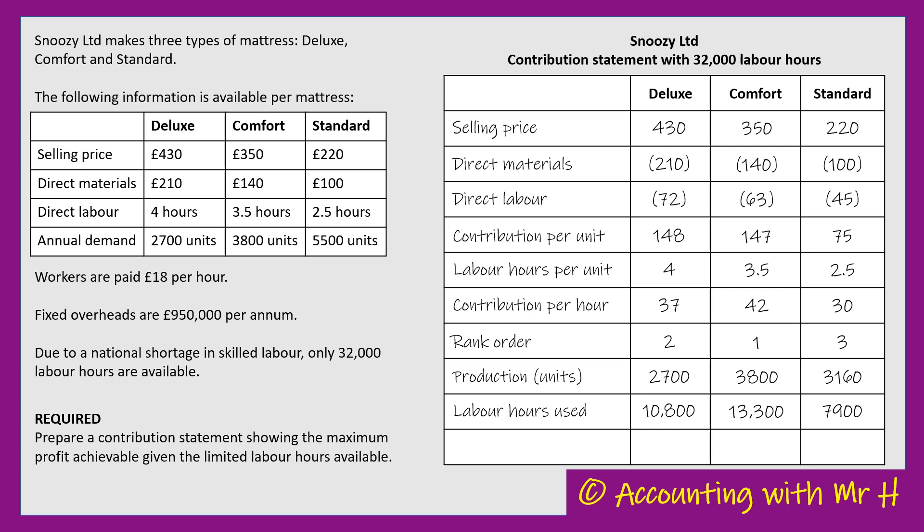What I'm now going to do is calculate the total contribution that each mattress will give me in this final row. Looking at the Deluxe: we've established the level of production is going to be 2,700 units of Deluxe, and per unit the contribution of a Deluxe is £148.